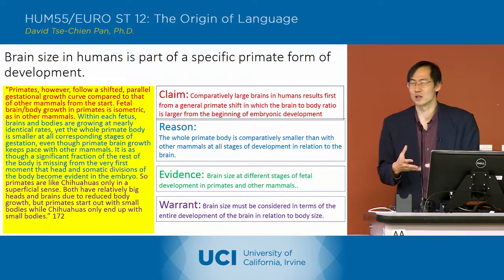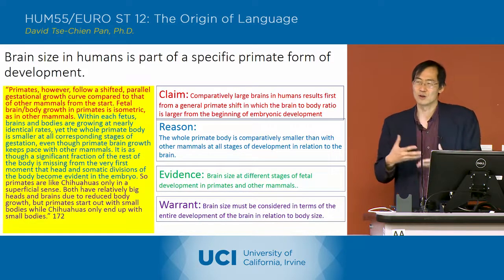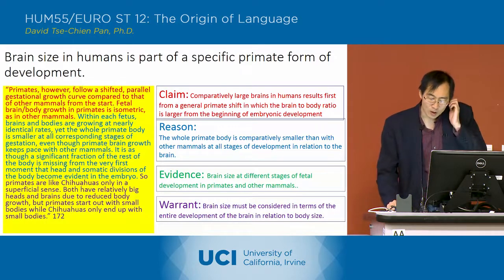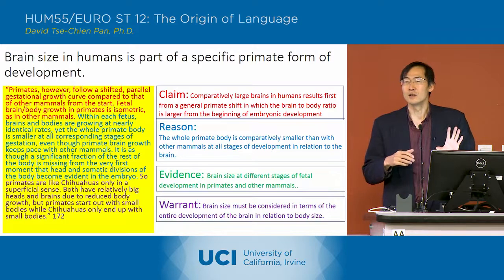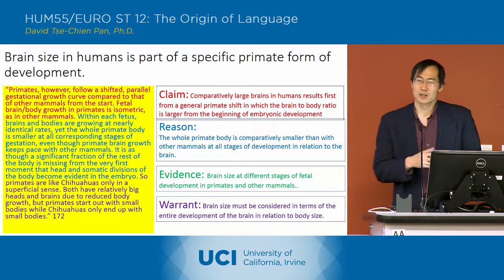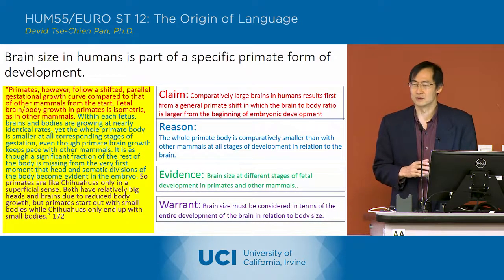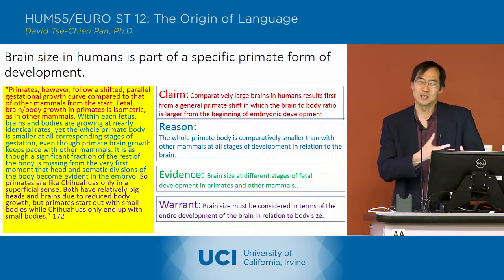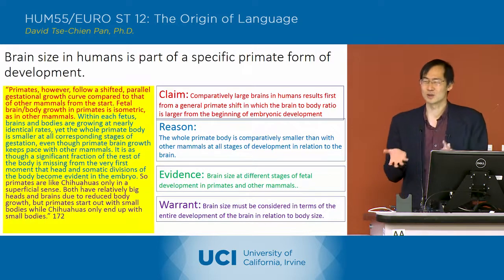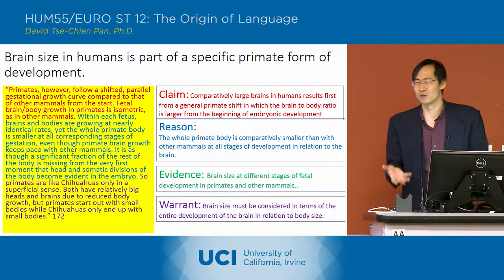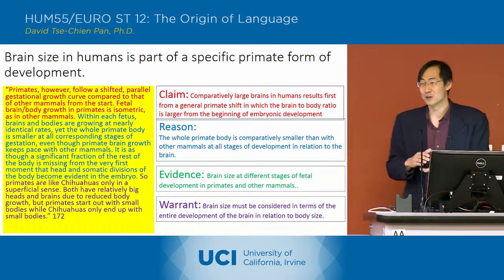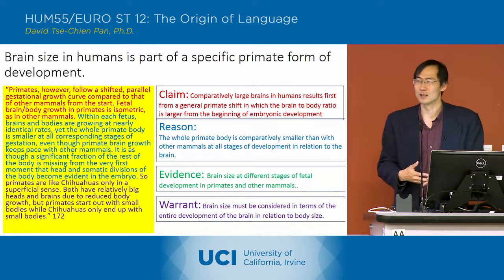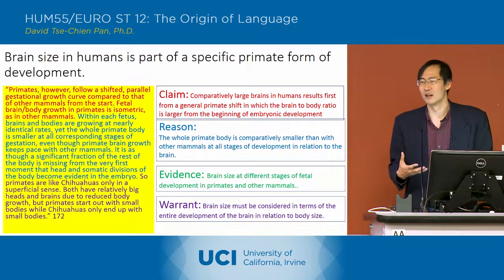What he calls encephalization is the degree to which the brain-to-body ratio is large — that you have a comparatively larger brain for your body size. Primate brains are generally larger relative to body size from the beginning of embryonic development, which influences how the brain develops in relationship to the body. This contrasts with the Chihuahua effect, where all dogs have basically the same brain size but Chihuahuas have a very large brain-to-body ratio compared to Great Danes.